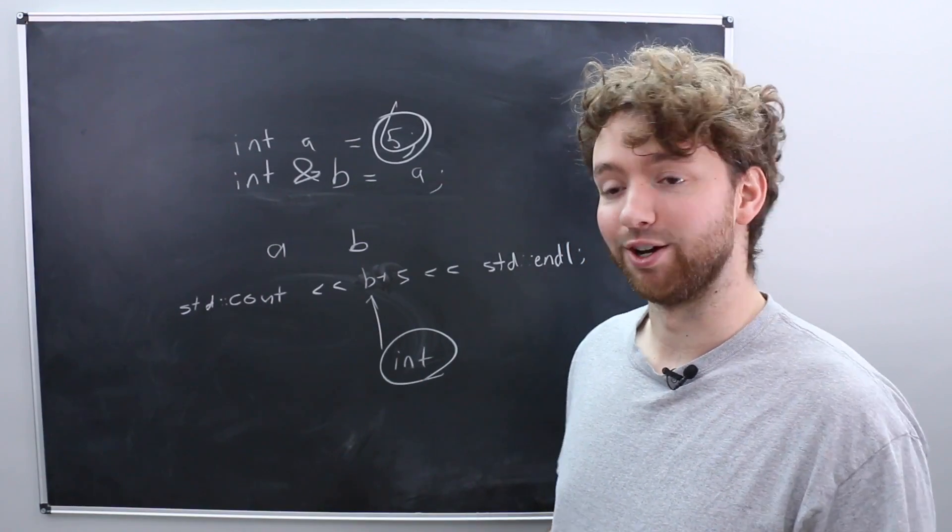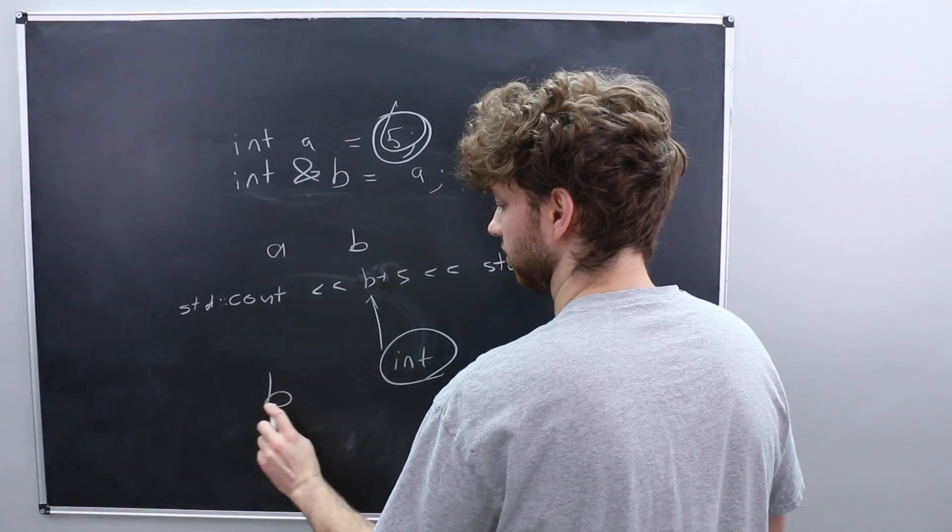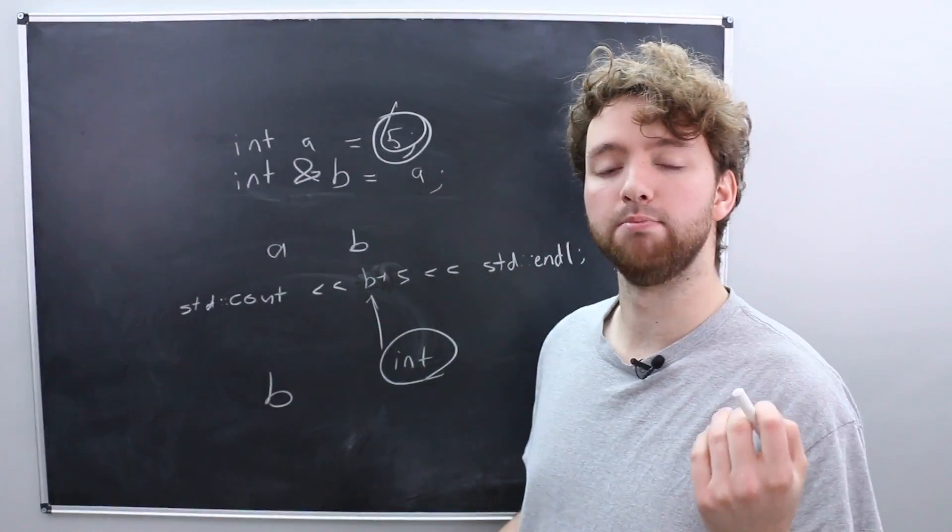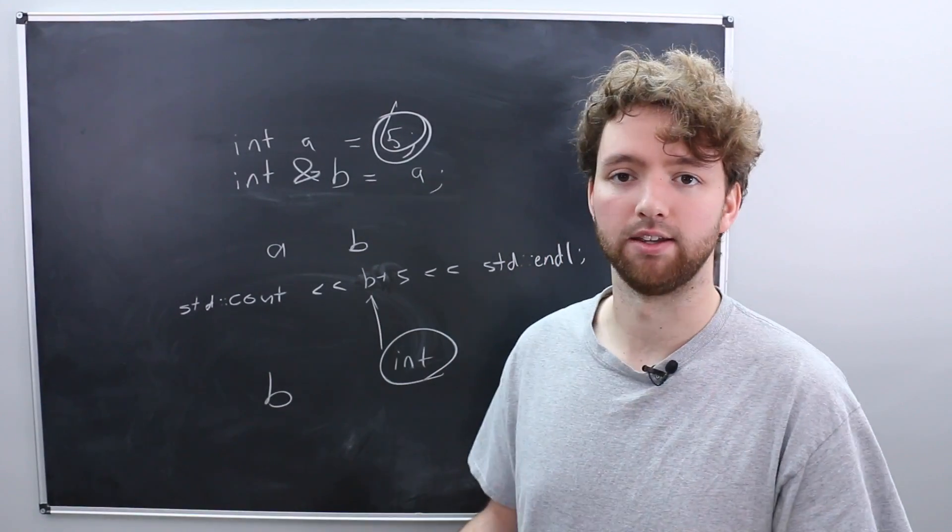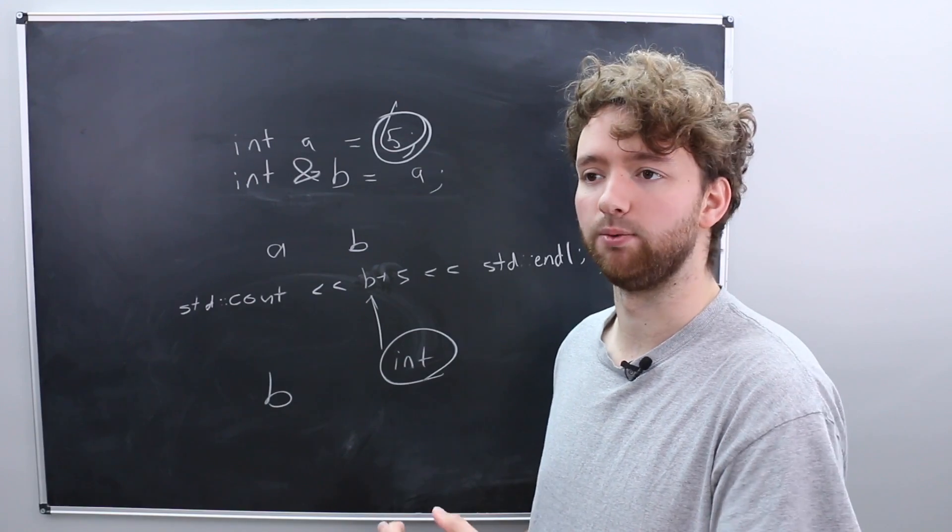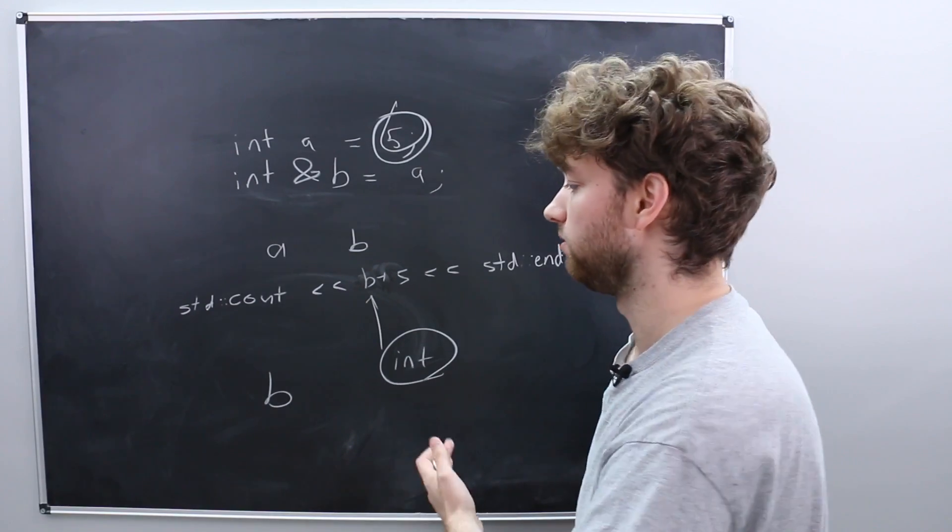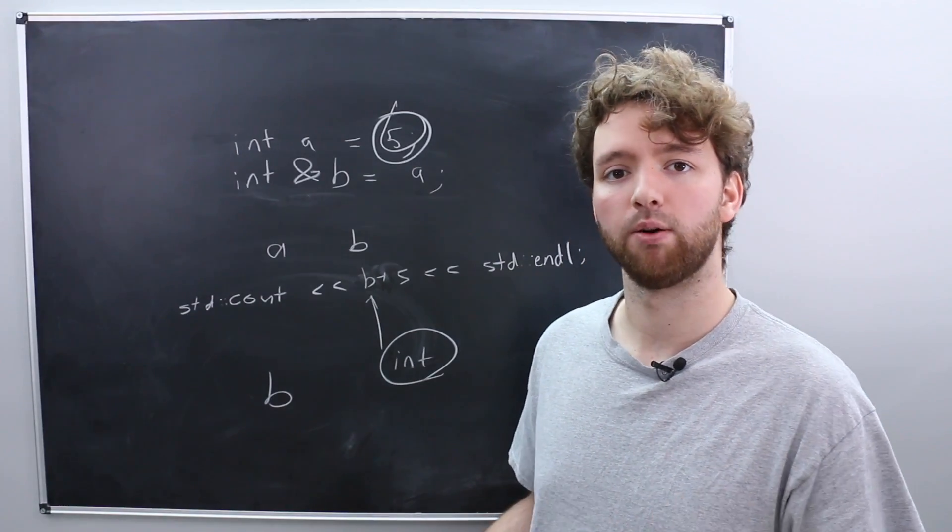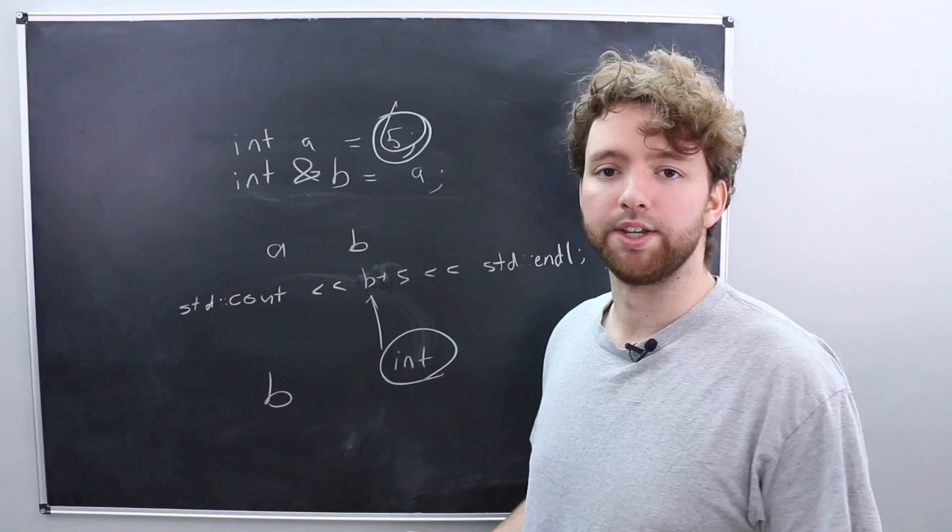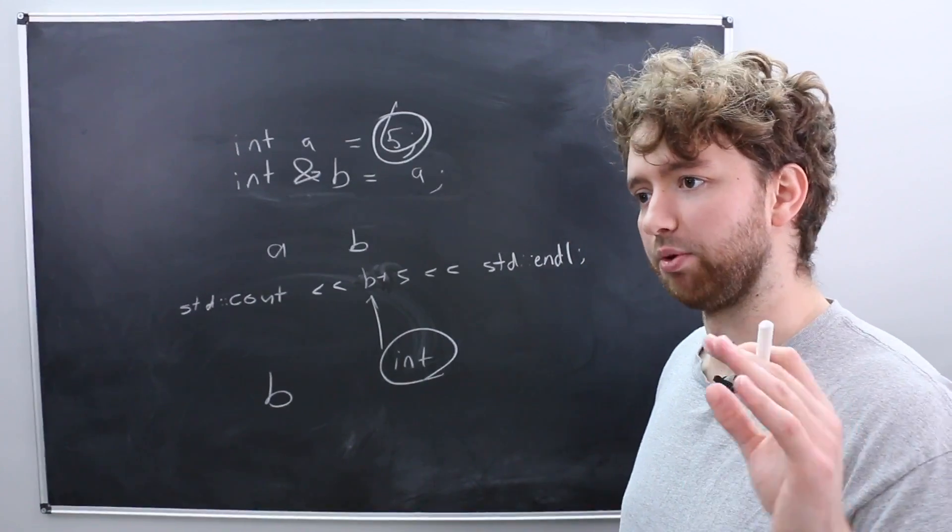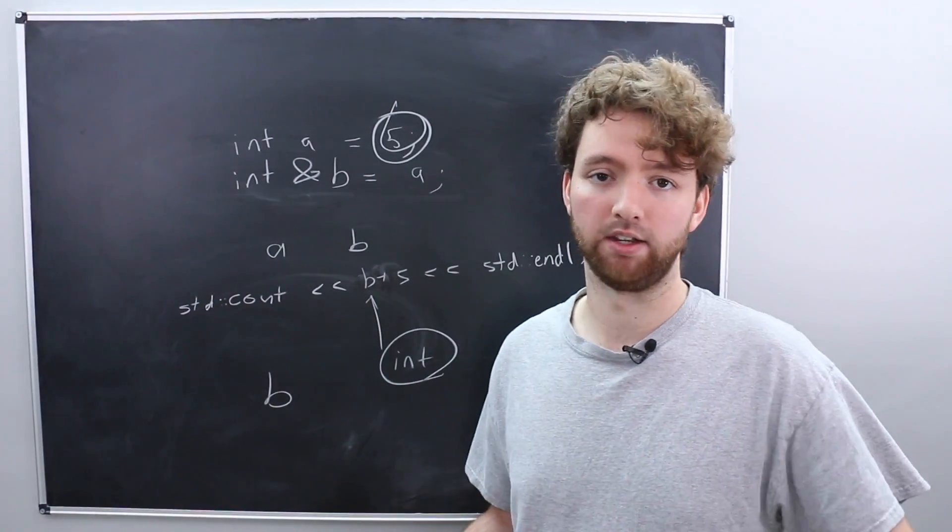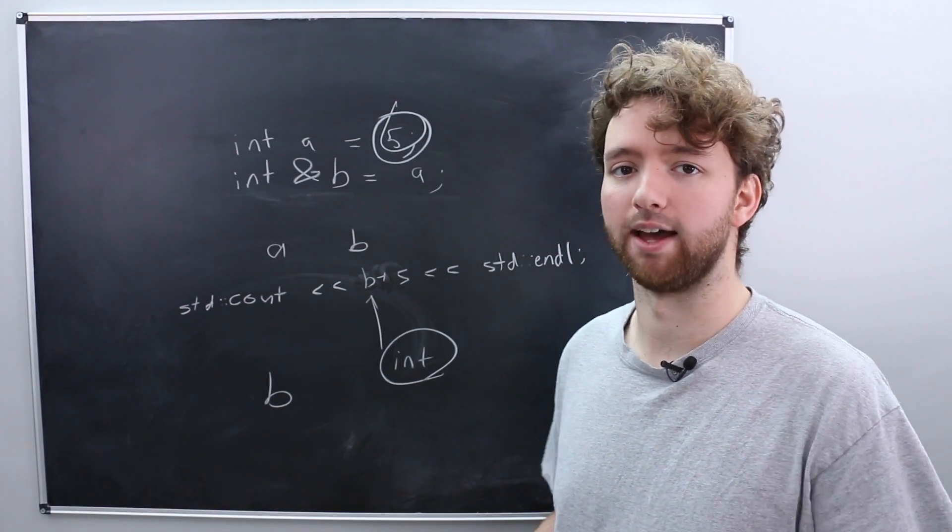One of the downsides here is that when you're working with a variable and you just see b, you can't immediately know if that is a reference or if it was the original variable. It really shouldn't matter because you can use them either way. However, it's just important to know that. This is different than pointers where with pointers you actually have to use them a different way. So we'll get into that later on.